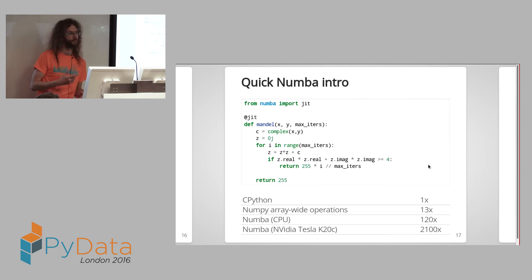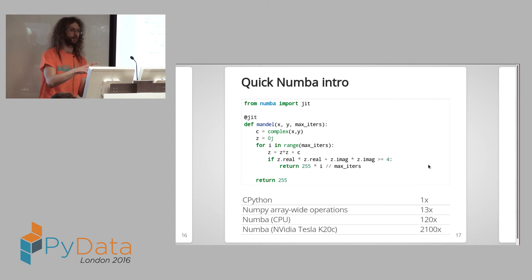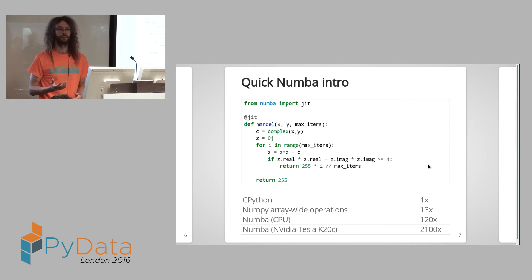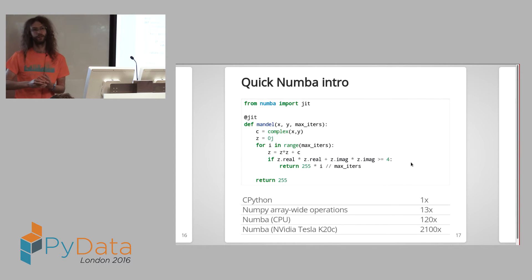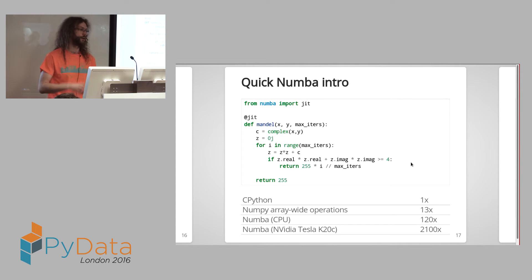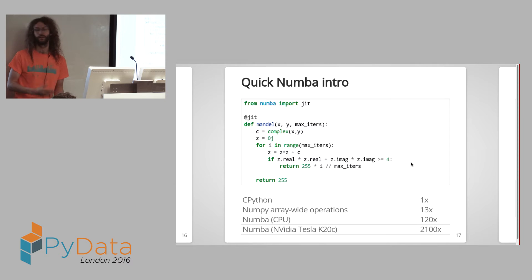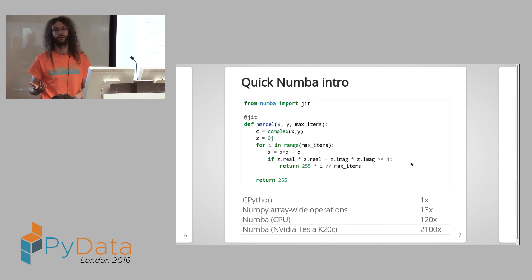Numba is a just-in-time compiler for Python. You can apply it to specific Python functions by using the JIT decorator — just decorate your function with JIT and it will compile it. Its main goal is to make array-oriented computing fast, with a lot of work going into NumPy support. As an example with a Mandelbrot function: pure Python on CPython runs at 1x; with Numba JIT you can get a speedup of 120 times.